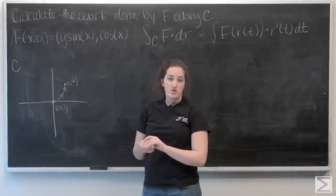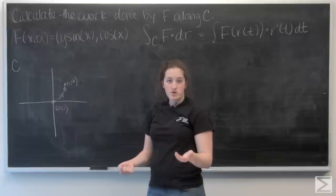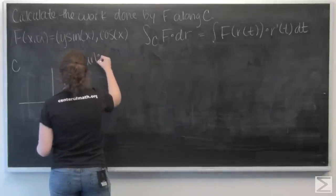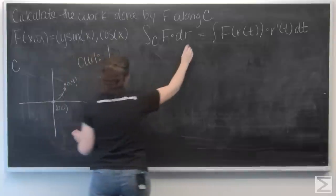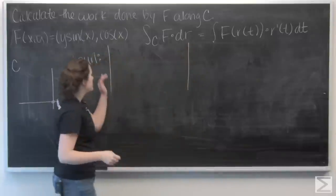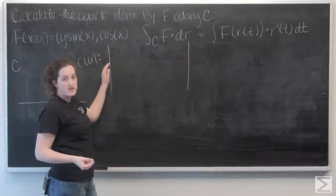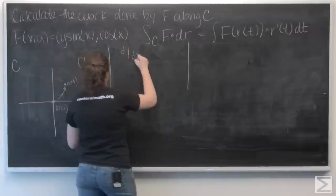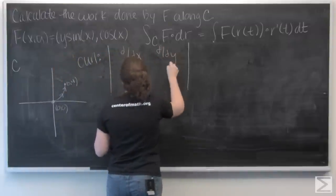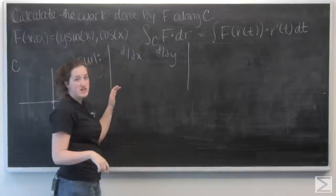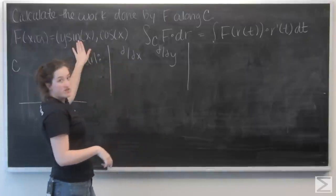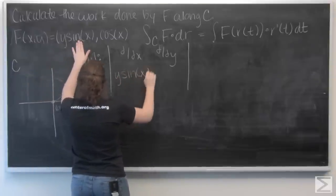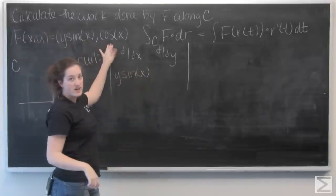Let's recall how to calculate two-dimensional curl. It's the determinant of a two-by-two matrix. The top row is partial derivatives d/dx and d/dy, and the bottom row is the i and j components of this function. So I have y sine of x and cosine of x.